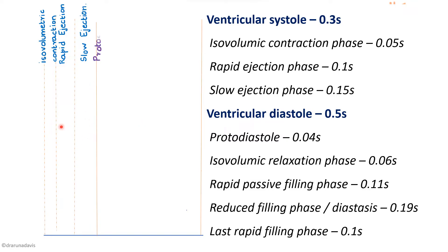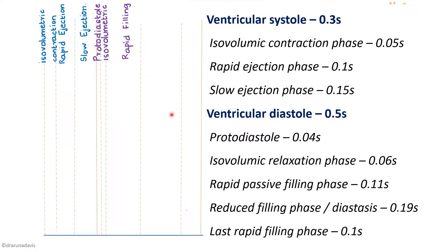Moving on to the ventricular diastolic part: protodiastole is just 0.04 seconds, so draw a very small column. Then isovolumetric relaxation — again a very small column. The rapid filling phase is around 0.11 seconds. The reduced filling phase (diastasis) is around 0.19 seconds and has the largest gap in this group. Finally, the active filling phase corresponding to atrial systole is around 0.1 seconds. So systole and diastole have been divided into their corresponding phases with column widths depicting duration.